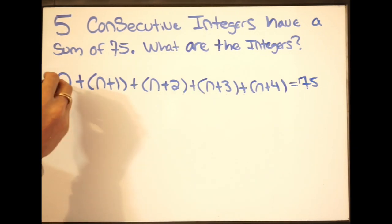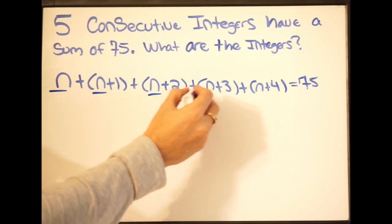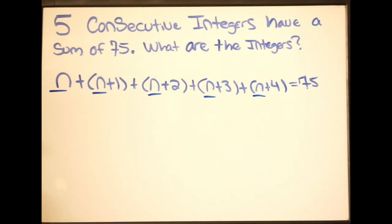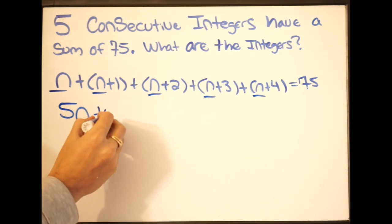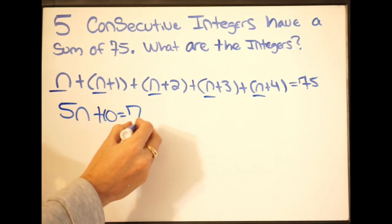So let's go ahead and combine our like terms. We have here, here, here, here, and here. So combining the n's, we're going to get 5n. Then combining our constants, 1 plus 2 is 3, plus 3 is 6, plus 4 is 10.